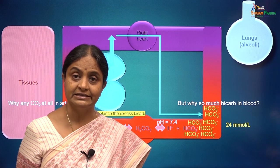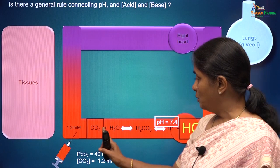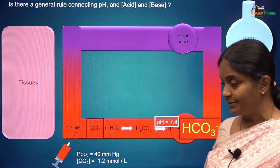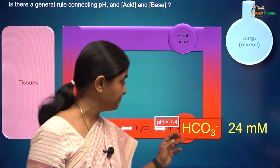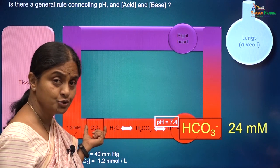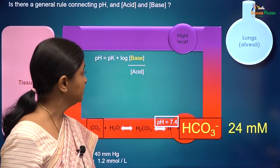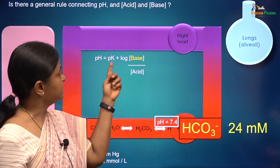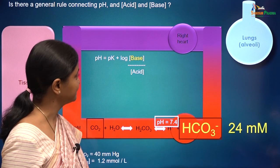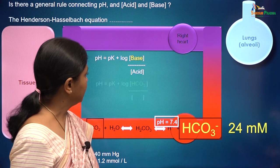Why do the kidneys have to put so much bicarbonate into blood? We will reserve that question for later. We now have an equilibrium status: 1.2 millimoles per liter carbon dioxide in equilibrium with 24 millimoles per liter bicarbonate, and the pH is 7.4 in that condition. Is there a general rule relating CO₂ concentration, bicarbonate concentration, and the resulting pH? The rule is: pH = pK + log(concentration of base / concentration of acid). This is the Henderson-Hasselbalch equation.